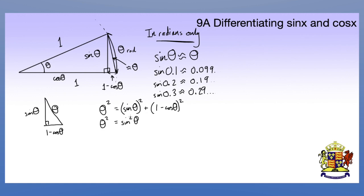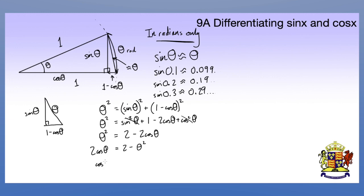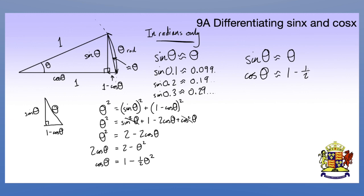This gives us sine squared theta plus 1 minus 2 cos theta plus cos squared theta. The sine squared theta and the cos squared theta combine using our identity to equal 1, so we have 1 plus 1 which is 2 minus 2 cos theta. Rearranging gives 2 cos theta equals 2 minus theta squared, so finally cos theta equals 1 minus one-half theta squared. That is my second small angle approximation: sine theta is approximately theta, and cos theta is approximately 1 minus one-half theta squared.